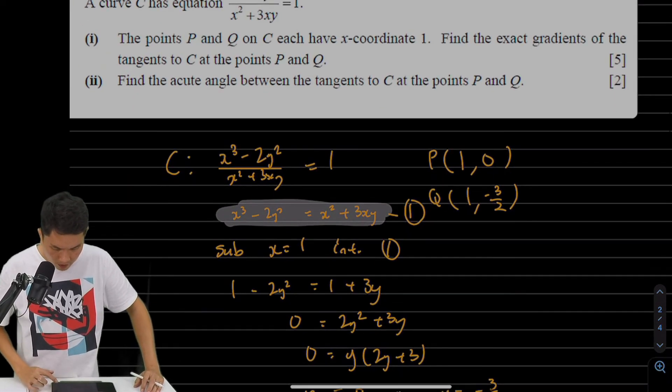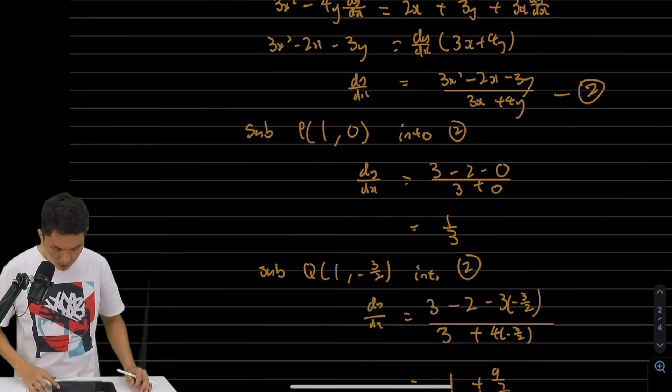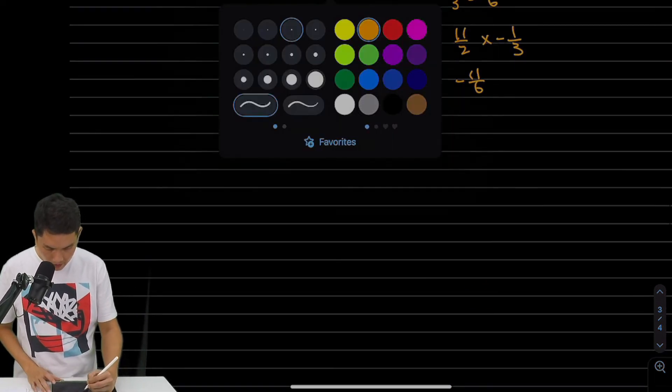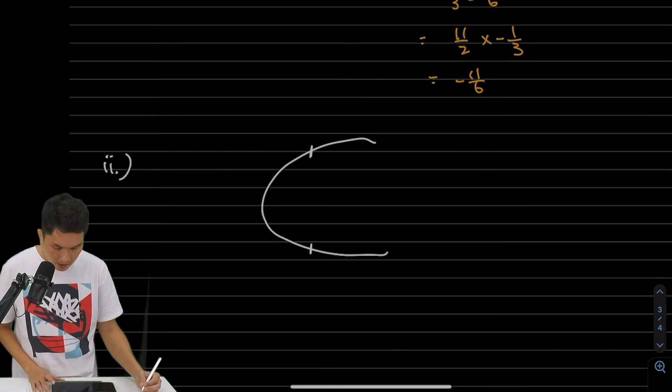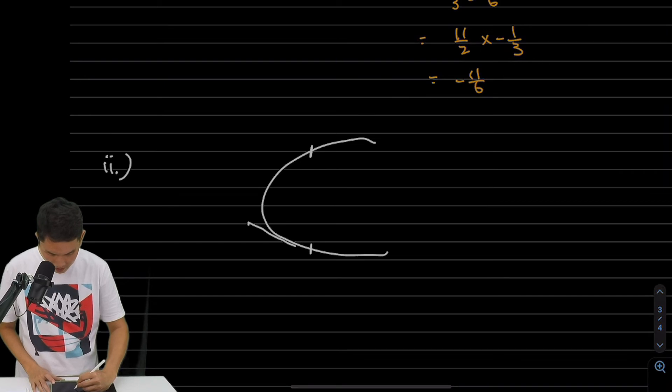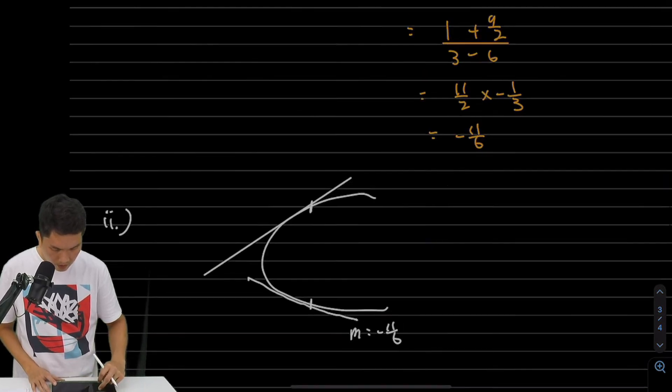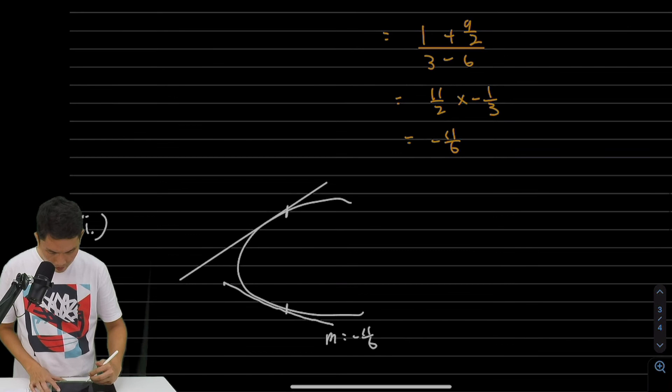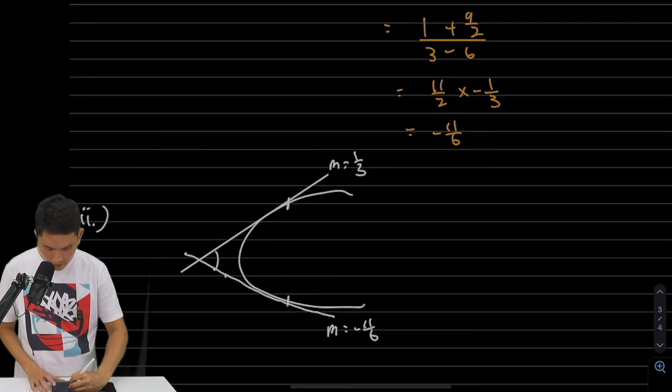This is a nice question. What does it mean to find the acute angle between the tangents? Let's visualize what's happening. If I have a curve, and at x = 1 there are two positions, one gradient is -11/6, maybe this one, and the other is 1/3. We want to find this angle here.